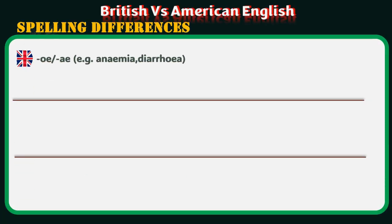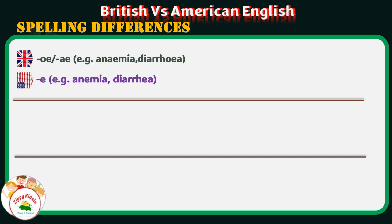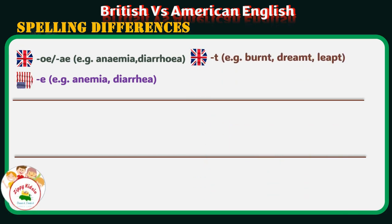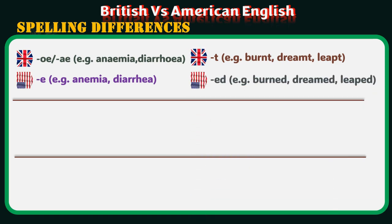Spelling differences: British and American English have some spelling differences. British English ends with OE/AE — examples: anaemia, diarrhoea. American English ends with E — examples: anemia, diarrhea. British ends with T — examples: burnt, dreamt, leapt. American ends with ED — examples: burned, dreamed, leaped.